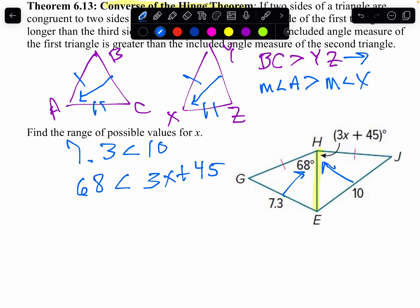Now, we are just going to solve that. So let's subtract 45 from both sides. And then, we're going to get 8 minus 5 is 3, 6 minus 4 is 2. That's less than 3X.